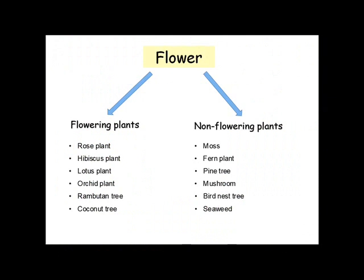Now students, let's do a quick revise on what we have learned just now. Examples of flowering plants are rose plant, hibiscus plant, lotus plant, orchid plant, rambutan tree, and coconut tree. Examples of non-flowering plants are moss, fern plant, pine tree, mushroom, bird nest tree, and seaweed.